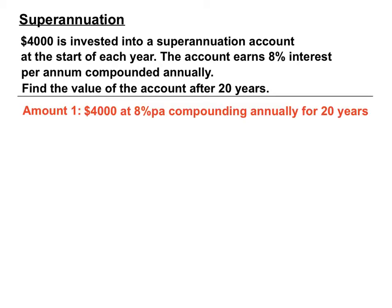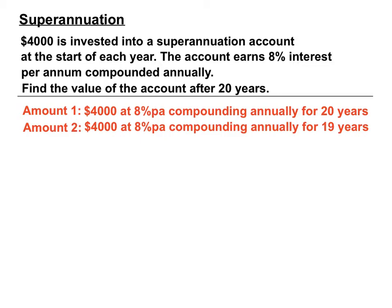The first $4,000 is put in at the beginning of that first year and it earns 8% per annum, compounding annually for 20 years. That's like a compound interest question, but we'll have more things added to it. At the beginning of the second year, there's a second amount — another $4,000 attracting the same interest rate — but notice that it only compounds for 19 years.